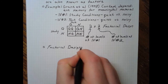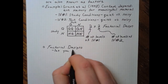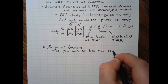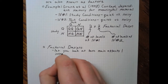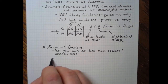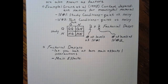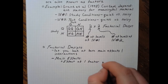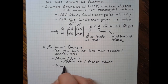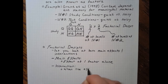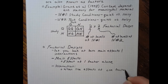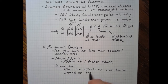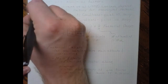When we think about factorial designs, they can really show us two different things: main effects and interactions of our different factors. A main effect is just what one of our factors — one of our independent variables — is doing by itself. An interaction is how they're interacting: specifically, when the effect of one factor depends on or is contingent upon the levels of a second factor.